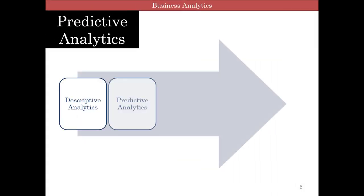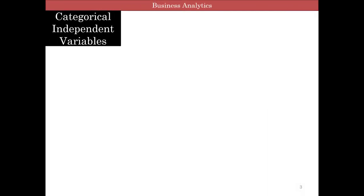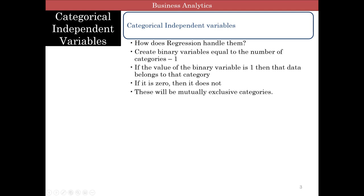We are into multiple regression and predictive analytics, trying to figure out how to predict when you have more than one independent variable. Now we come to the situation where what happens if the independent variable is categorical and not just continuous. Remember up to this point you've been dealing with only continuous variables and you have not been dealing with a categorical independent variable.